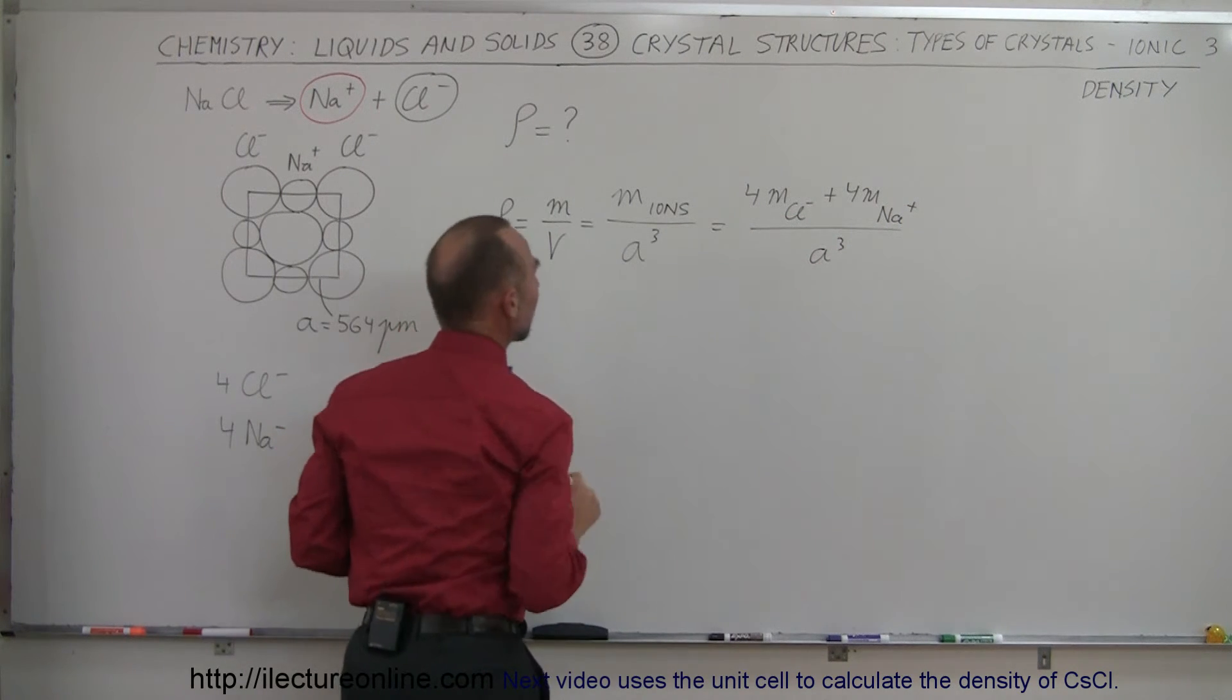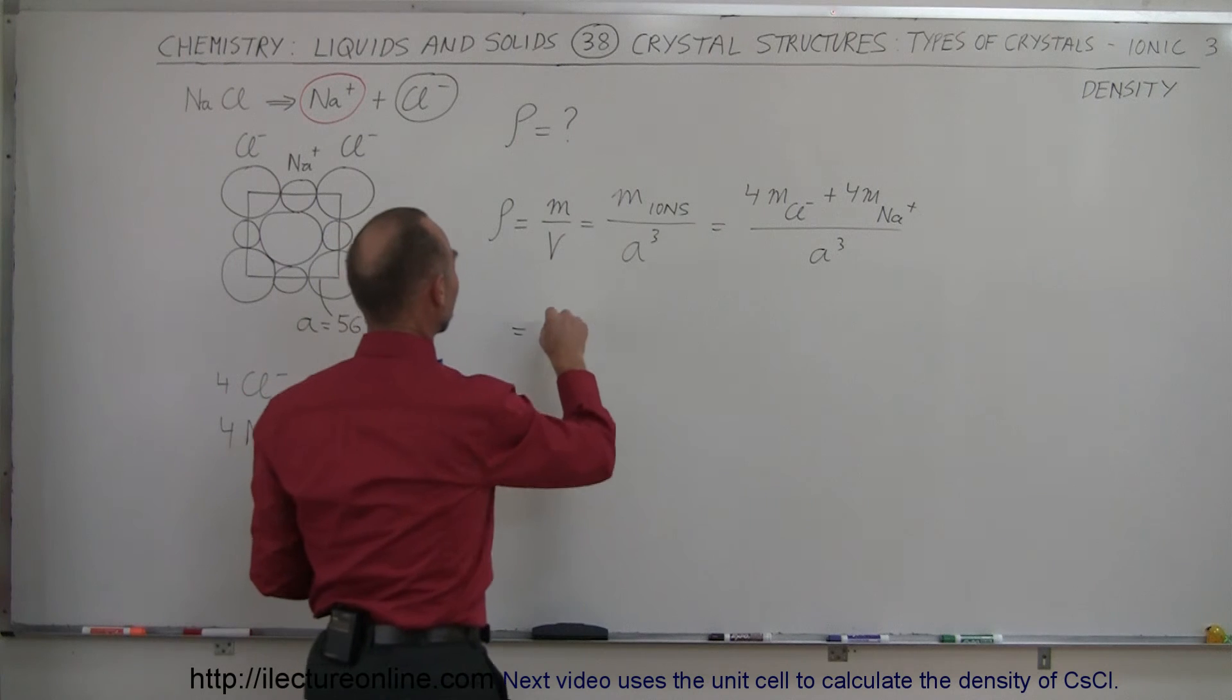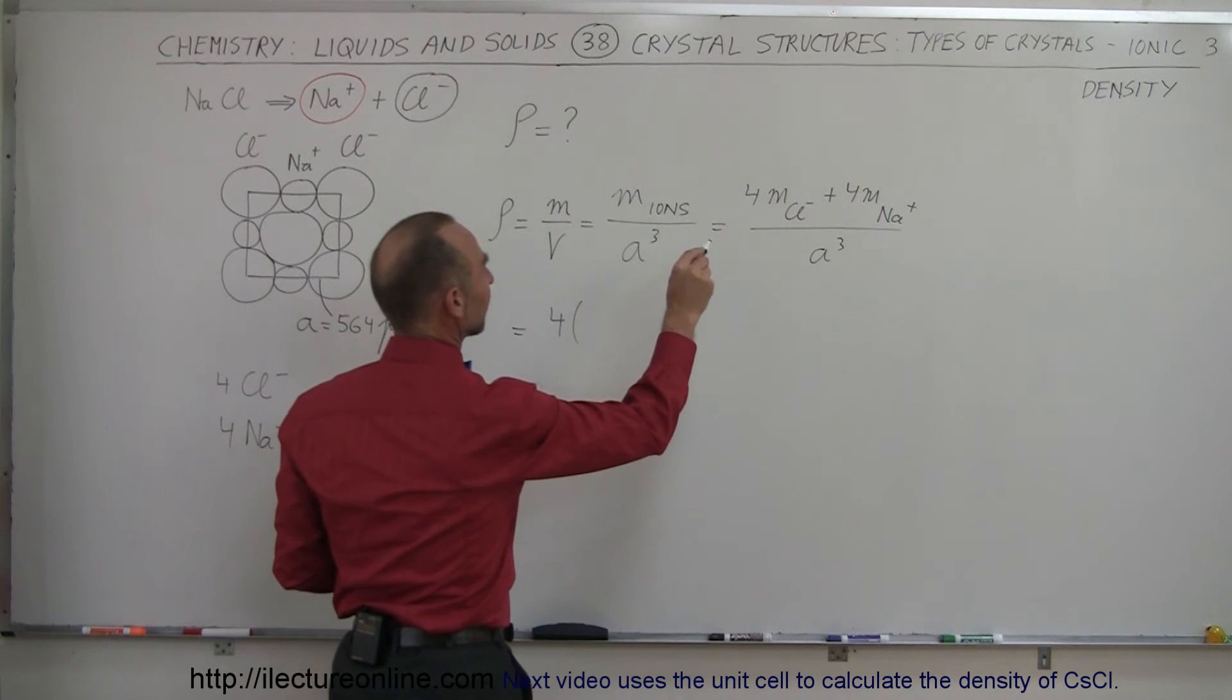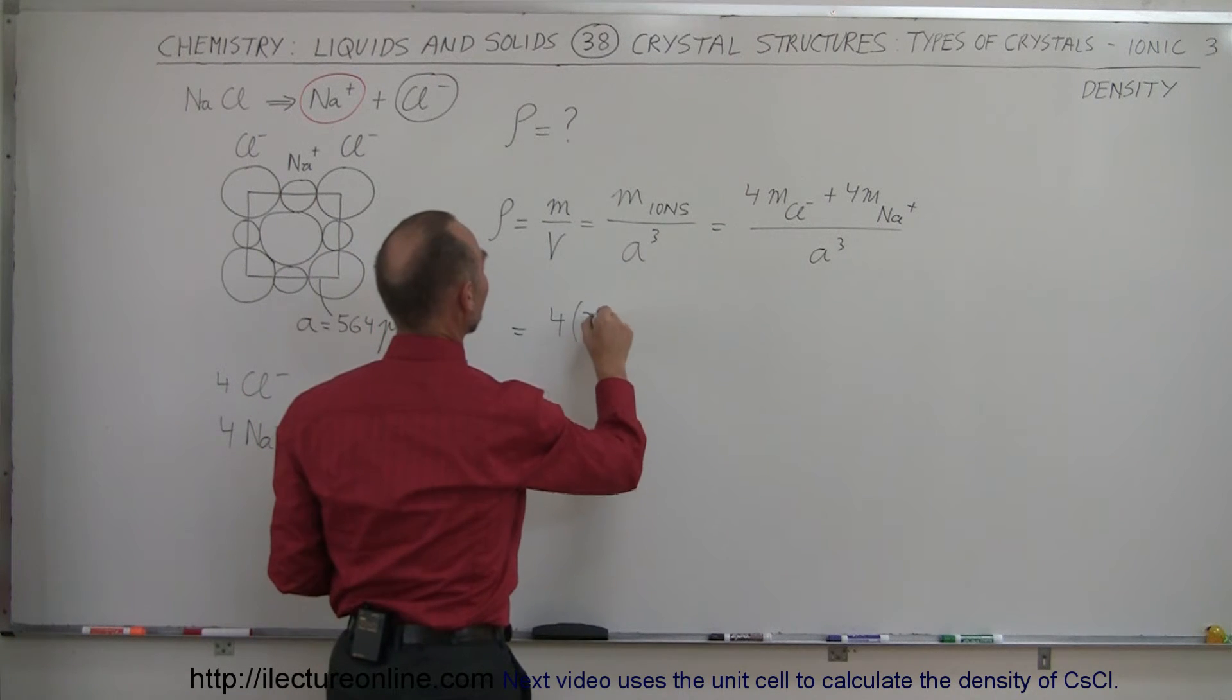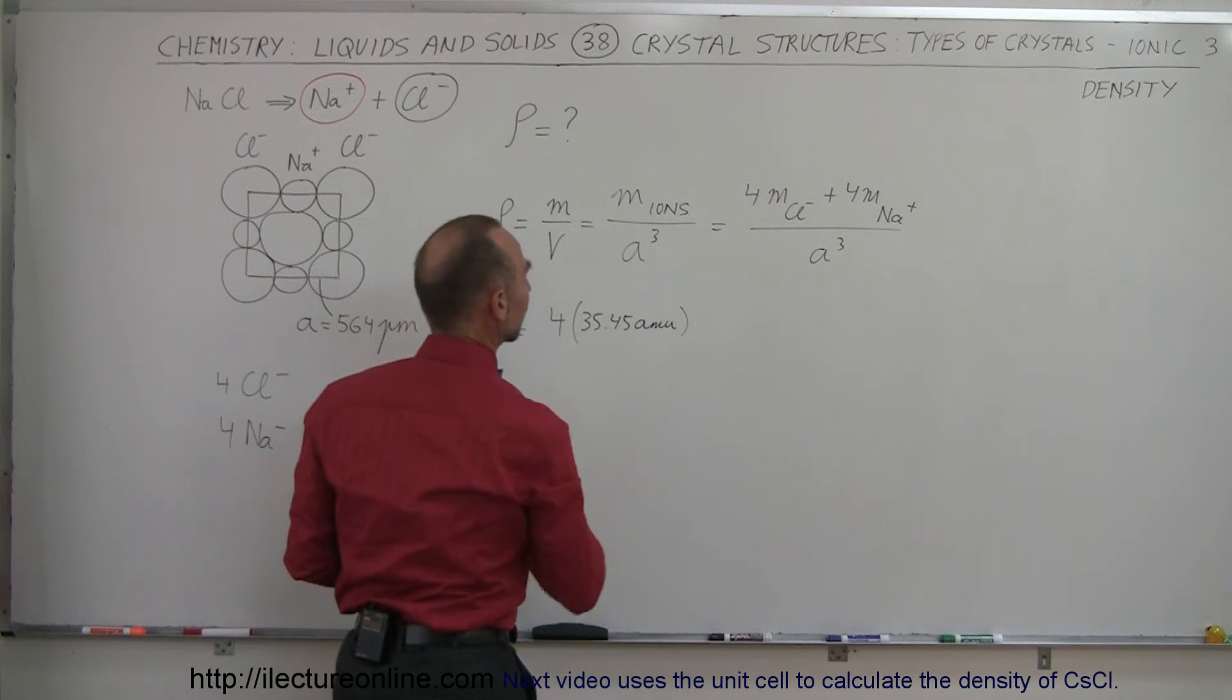So what is the mass of a chlorine ion? So it's four times, chlorine ion is 35.45 AMUs, that's atomic mass units per chlorine ion.